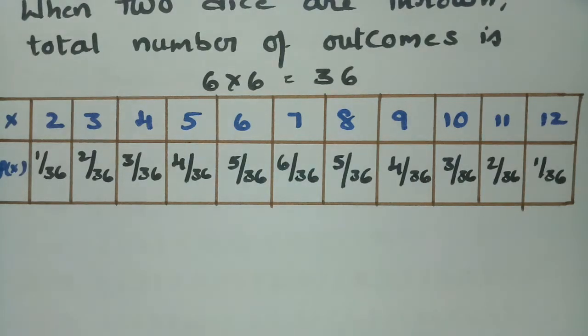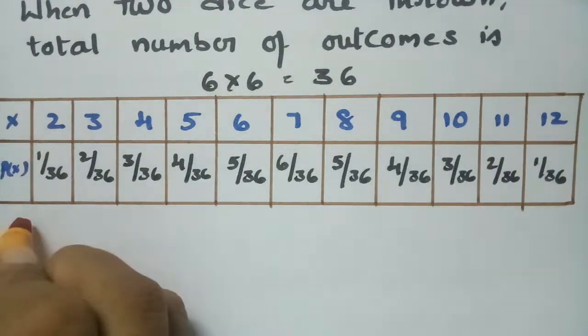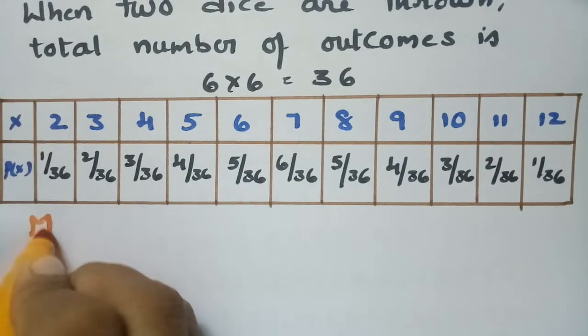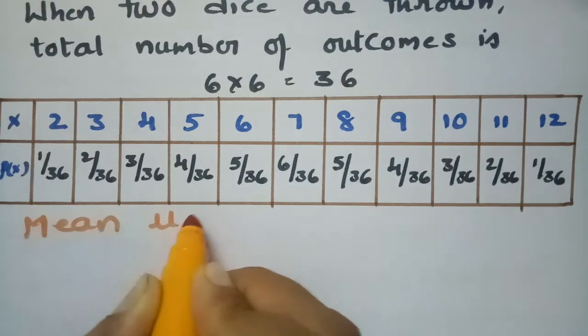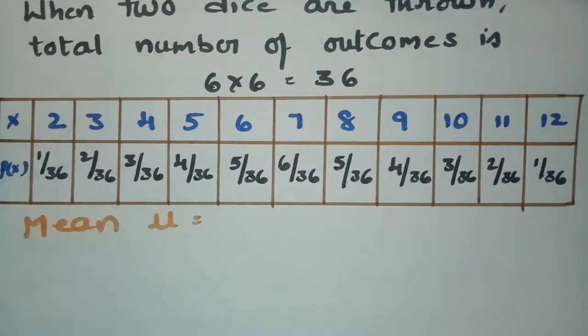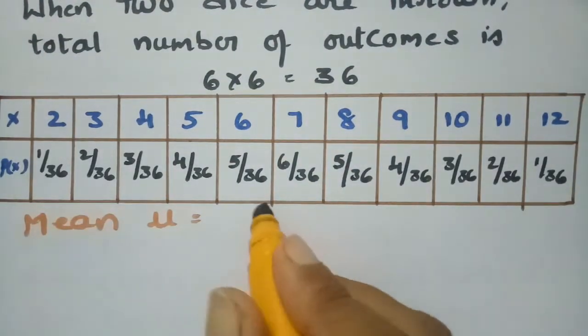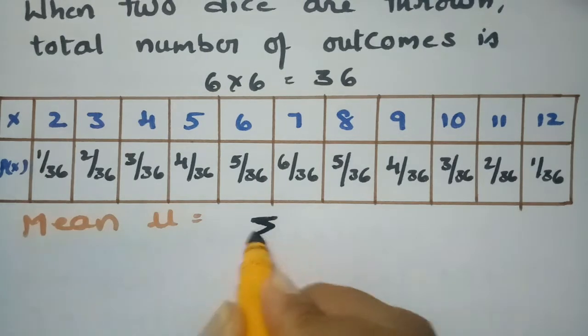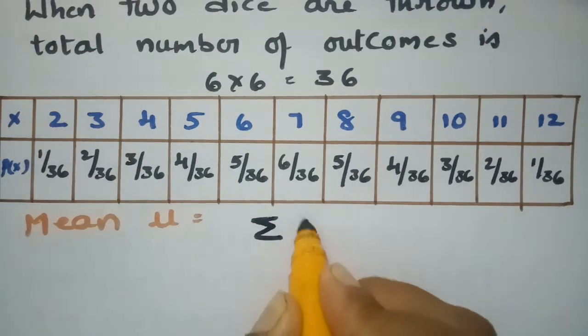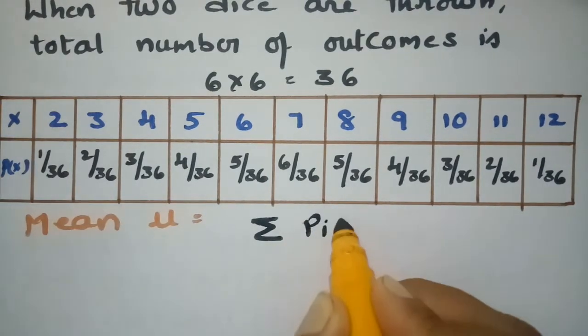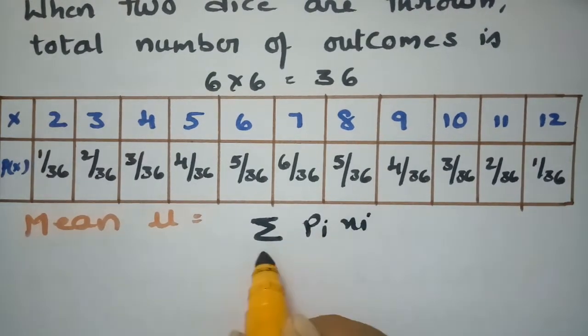Now we have to find the mean μ. The formula for finding the mean is μ = Σ(pi × xi).